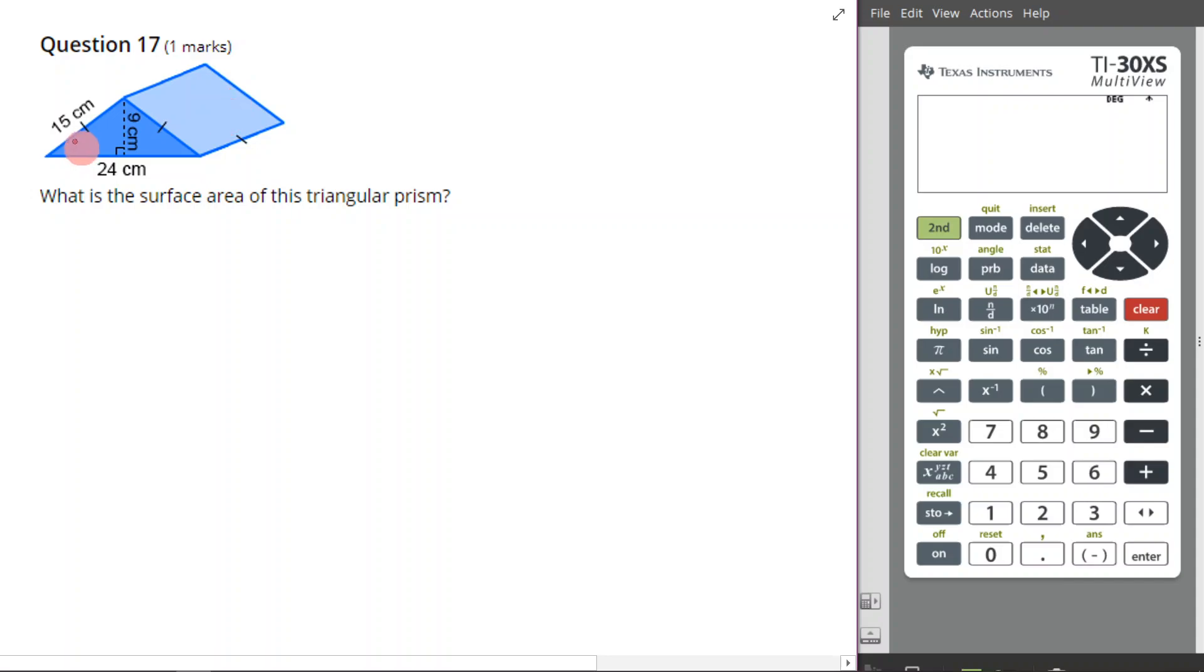So I'm going to begin by finding the surface area of this triangle right here. To do this, we're going to have to remember what the area formula for a triangle is. It's base times height divided by 2. Now my base in this case is going to be 24. The height is going to be 9. Remember the height has to be perpendicular to the base, which means it has to be at 90 degrees to it. Times that by 9, and then you divide it by 2.